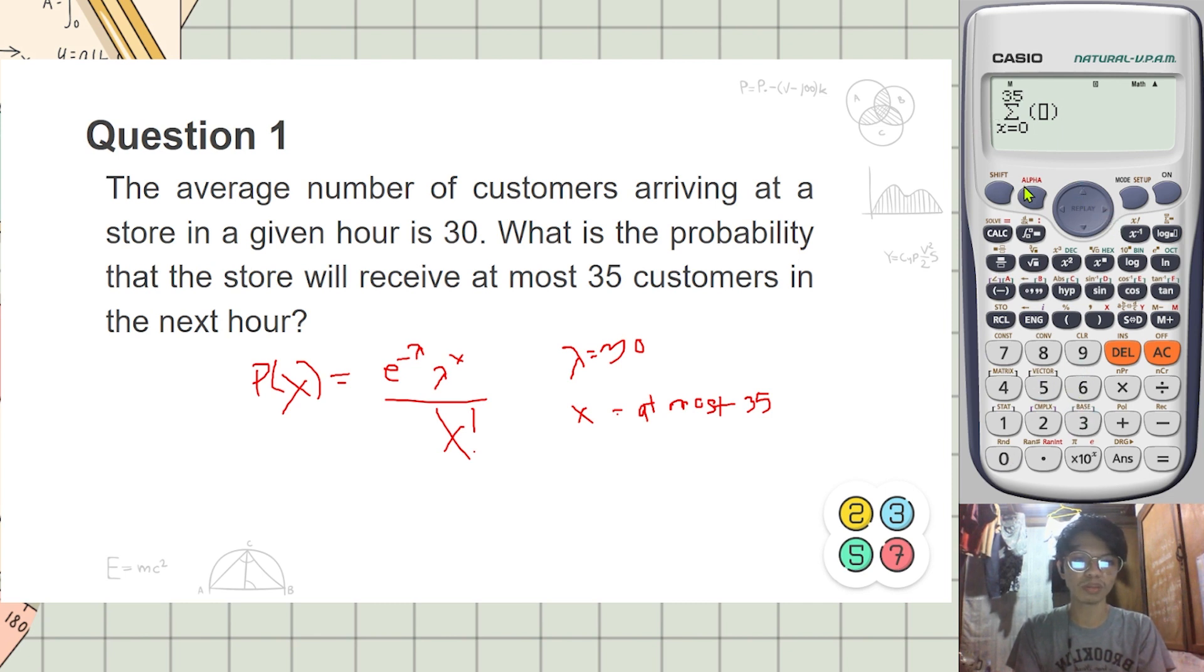Okay, enter mo lang yung formula. E raised to negative 30, times 30 raised to x, all over x factorial. Ay mali, sorry, alpha x, alpha x, shift factorial, equals.